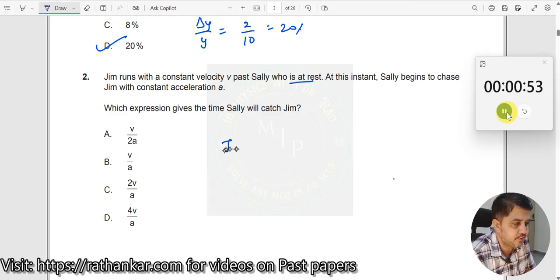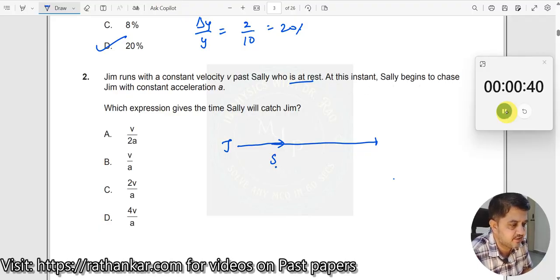So this is your Jim who is running like this with a constant velocity, and then Sally starts from here. He is starting here and he is at rest over here. Sally begins to chase Jim with constant acceleration at this instant, so when he crosses here, she starts from here with an acceleration.